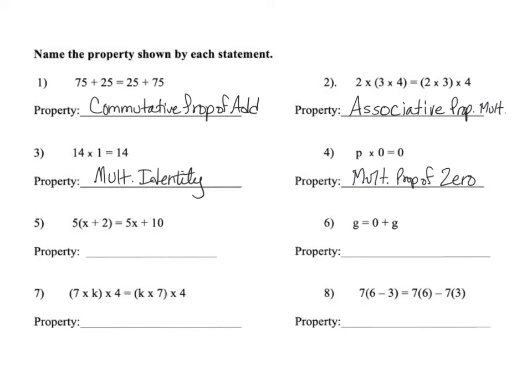Moving on to number 5, this guy should look familiar. We have a 5 on the outside of parentheses and it's showing on the right that it was multiplied times x and it was multiplied times 2 to turn into that 10. So that, you all know, is the distributive property.